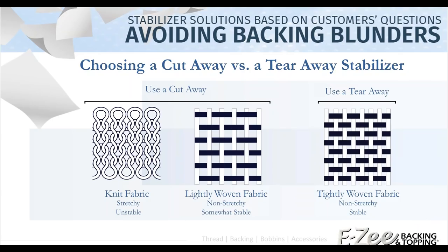Your cutaway stabilizers are for your non-stable fabrics. If it's a knit fabric — think about a knit sweater or knit blanket, that's just one single strand that's intertwined — if you were to cut one of those strands you'll actually have a hole in it. It's very stretchy and can stretch in all directions, so it's not stable. Then you have your lightweight woven fabrics — dress shirts, Oxfords, or any of the lightweight garments out there. While they're typically not stretchy, they're only somewhat stable. Use your cutaway stabilizers for those fabrics to add more stability.